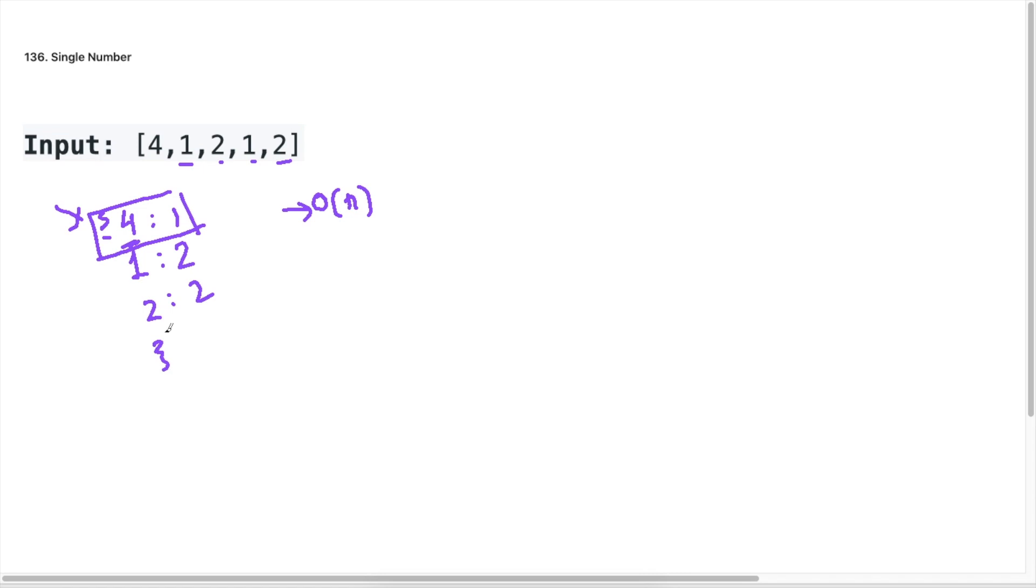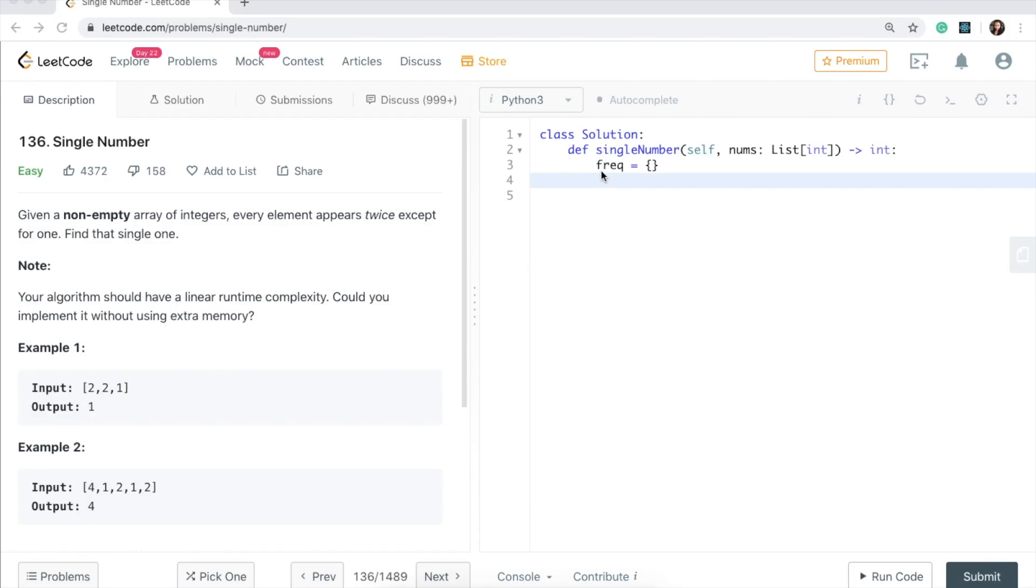So let's look at this code quickly and then we'll come back here and optimize this using XOR. I've created my frequency dictionary here, which is what we will use to track all our mappings. And what I'm going to do now is iterate over my nums list.